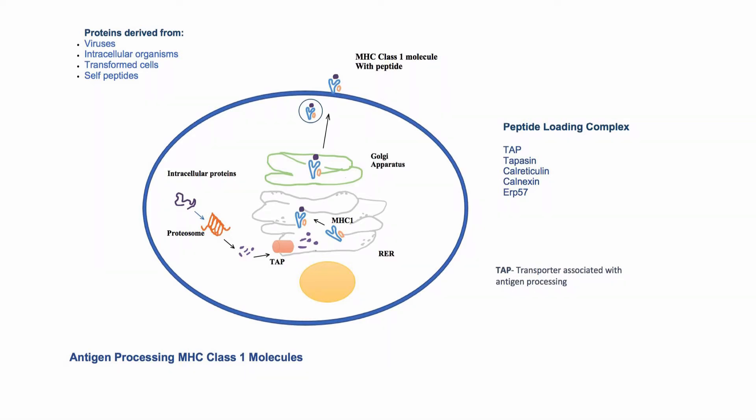These proteins are first tagged with a molecule called ubiquitin. Then these proteins pass through the proteasome. Proteasomes have proteolytic enzymes that break down these proteins into smaller peptides, some of which pass to the endoplasmic reticulum for assessment by cells of the immune system.